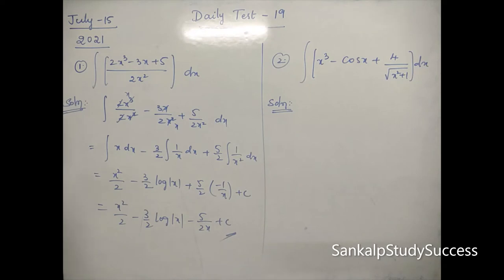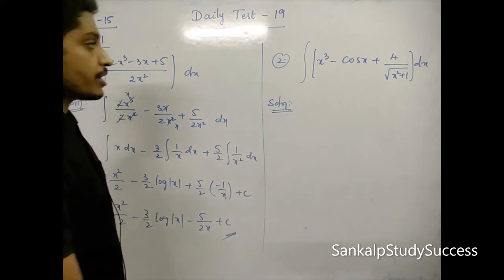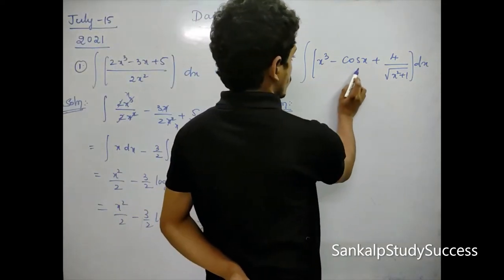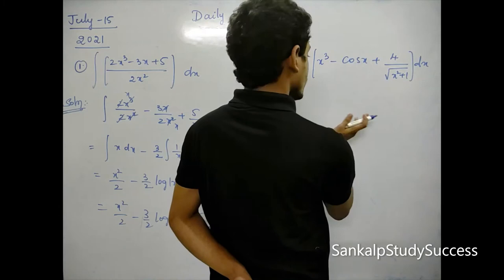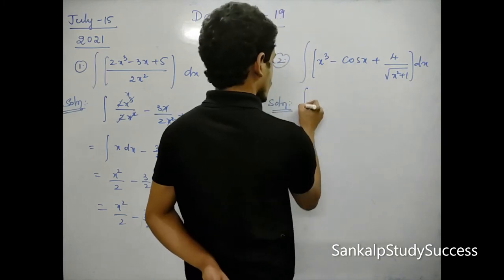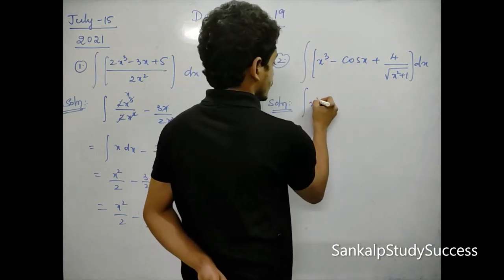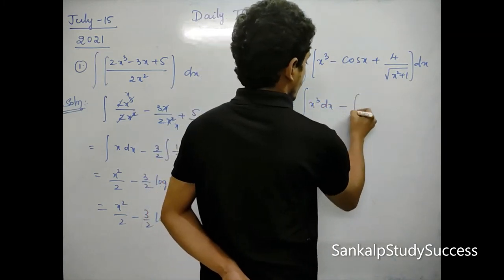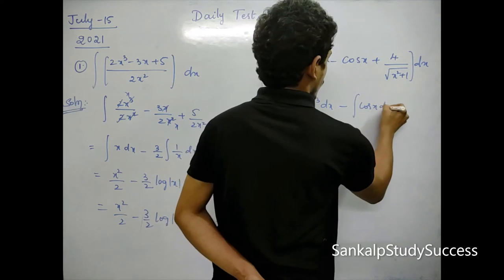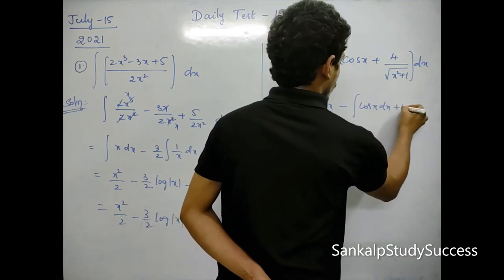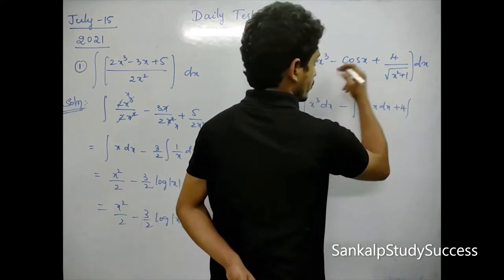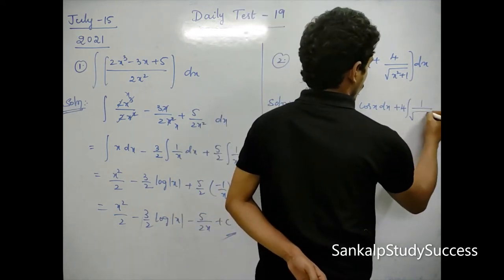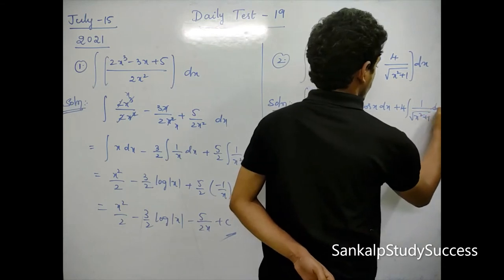Question number 2: Integral of (x³ - cos x + 4) divided by √(x² + 1) dx. We split: integral x³ dx, minus integral cos x dx, then 4 common — 4 times integral of 1/√(x² + 1) dx.